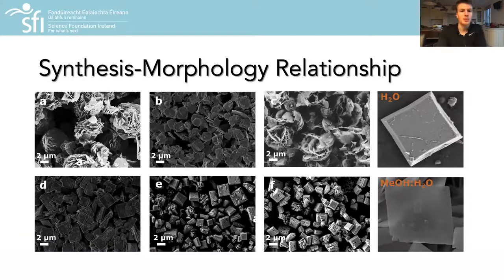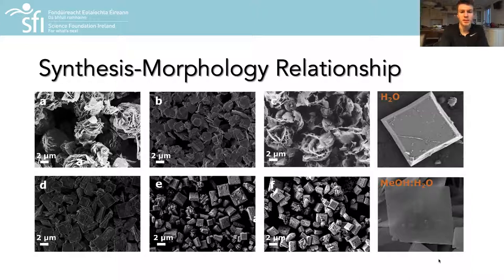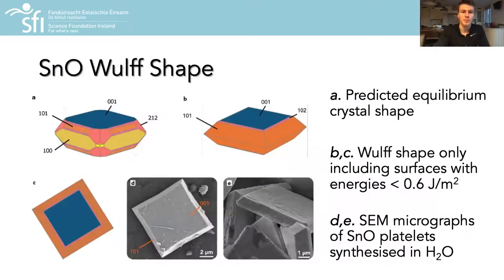In this work, we demonstrate a strong dependence of the nanoparticle morphology on the choice of solvent for crystal growth, ranging from flower-like morphologies in ethanol to uniform square platelets in water and very thin squares in aqueous methanol. Our experimental observations indicated that solvent boiling point, polarity, and viscosity were key factors in determining the resulting morphology.